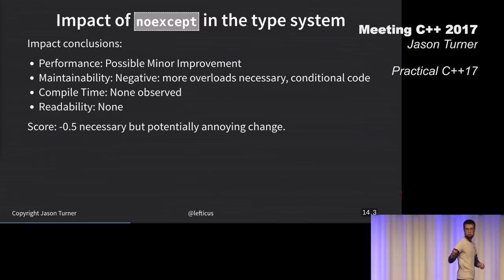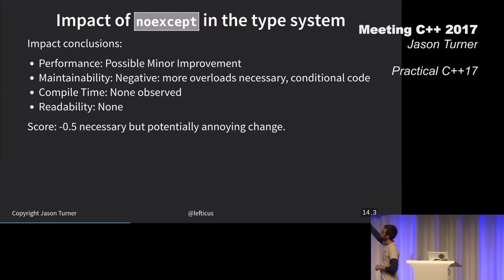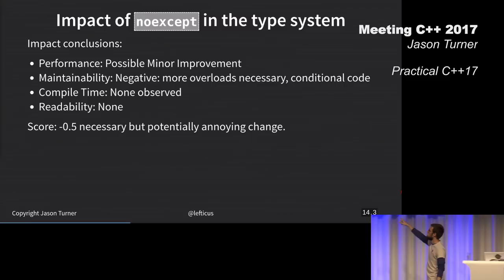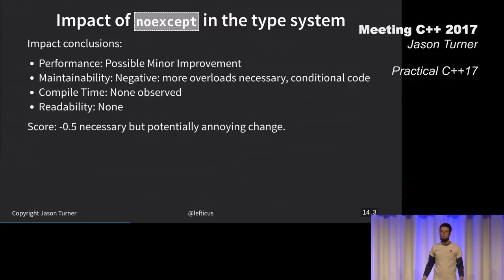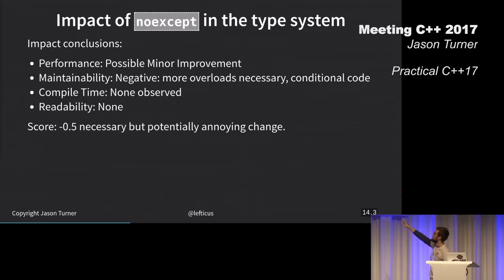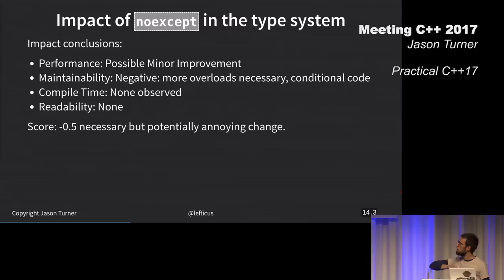I actually gave each of these things a rank. The score for this one was negative 0.5 on my score of usability. Minor performance improvement, plausibly. Negative maintainability, because I've got conditional code. I've got more overloads. No compile time difference observed, and no readability difference improved. So, what's going to be next? Some of you are definitely going to be disappointed.